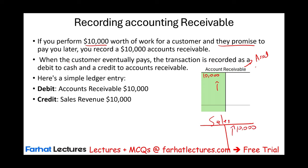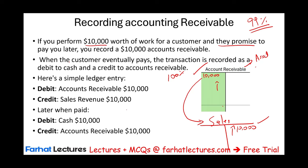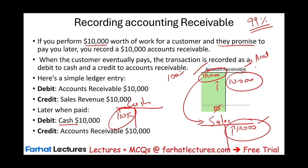You credit sales because you performed the work and can record the sale and the promise. The reason I said 99% is because in intermediate accounting you'll see that sometimes we debit accounts receivable and credit something else — for construction accounting or long-term contracts. For financial accounting purposes, essentially 100% of the time increasing receivable means: I performed the work, I expect to be paid. Eventually you receive the money: debit cash $10,000, credit accounts receivable, and the balance goes to zero.